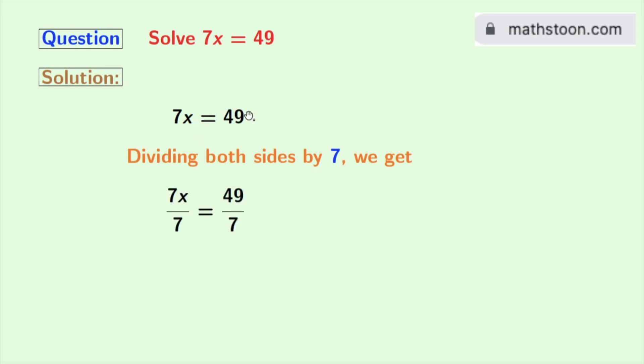Doing so, we get 7x by 7 is equal to 49 by 7.